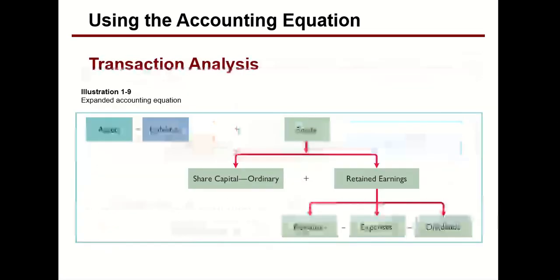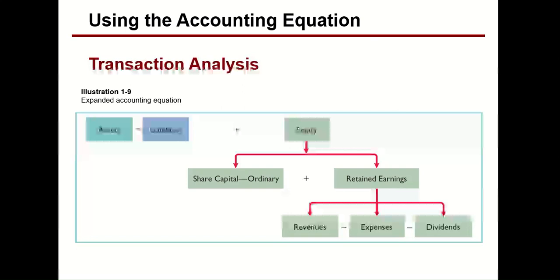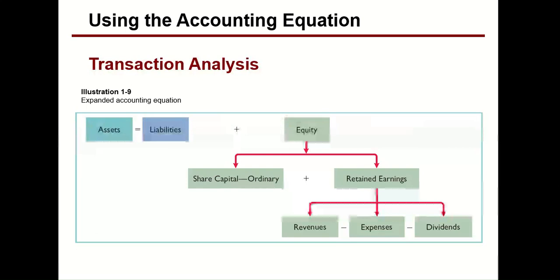Retained earnings has three components: revenues cause an increase in retained earnings, expenses cause a decrease in retained earnings, and dividends also cause a decrease in retained earnings. We have divided equity into two parts — one is investment by shareholders, called share capital, which is kept separate to track how much each investor initially invested. What the company has earned, saved, and kept in reserves is called retained earnings — revenue reserves — and it should be kept separate from share capital.